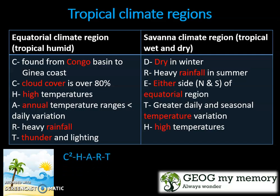The savannah climate region is dry in winter, has heavy rainfall in summer, and is found on either side of the equatorial region. It has greater daily and seasonal temperature variation and high temperatures. To remember this, you can use the acronym DRETH.